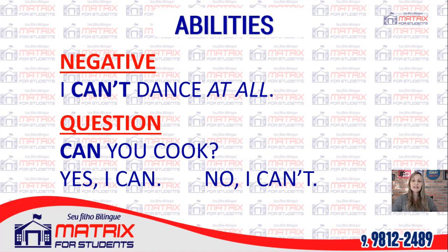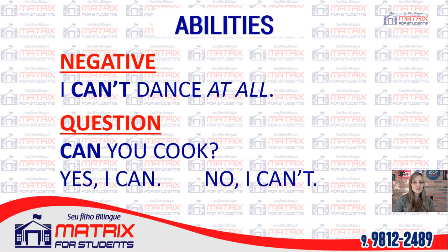Now we have examples of negatives and questions. O verbo 'can' é um modal verb, então ele não precisa de auxiliary. Ele não precisa de ajudante para fazer a negativa nem a pergunta. Como qualquer outro verbo a gente colocaria do ou does, mas com 'can', na negative é só colocar 'can't'. For example: I can't dance at all — eu não sei dançar nada. 'At all' is very important — na negativa a gente costuma usar bastante essa expressão. Cuidado com a pronúncia: at all. Repeat with me: I can't dance at all.